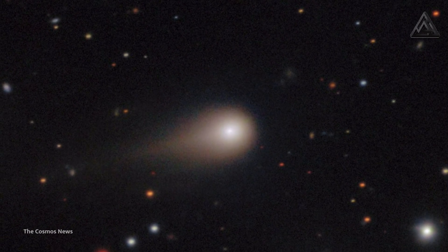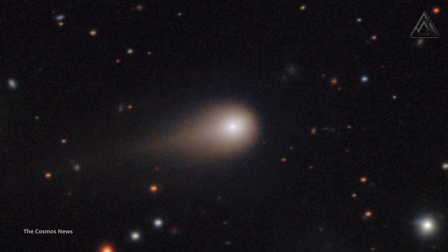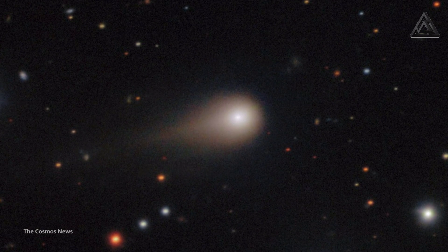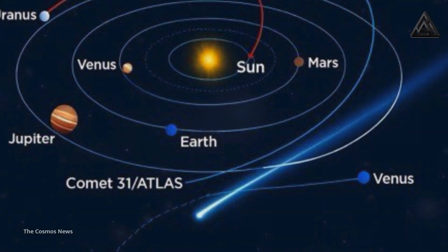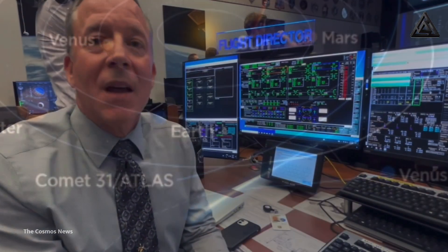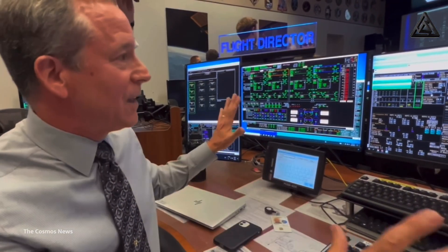Telescopes measured its nucleus to be between 0.44 kilometers and 5.6 kilometers in diameter. These facts confirm the object came from outside our solar system. Because of that, scientists have paid extra attention to what it does and how it behaves.